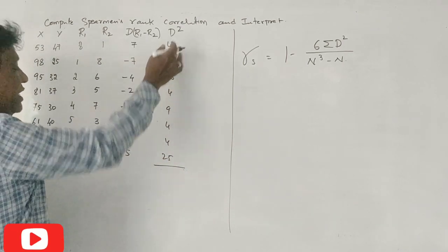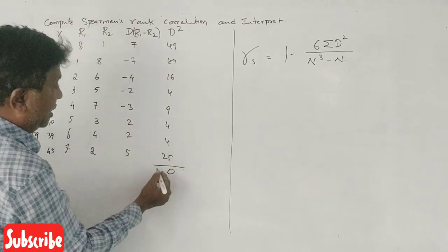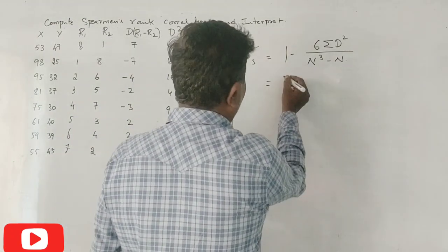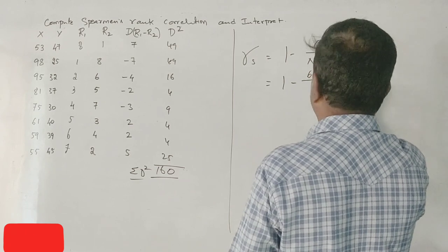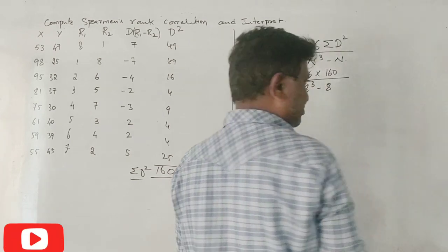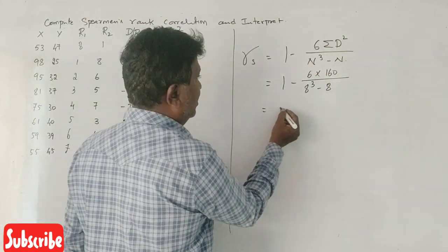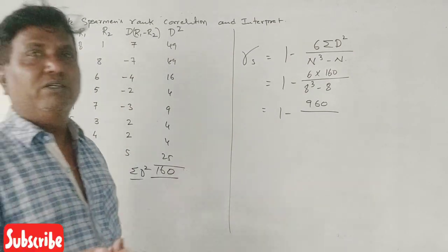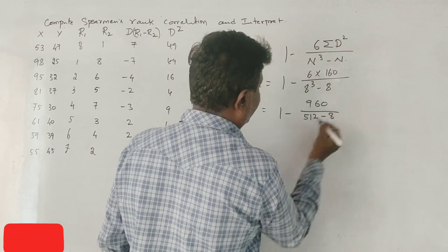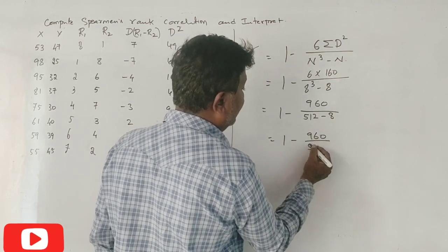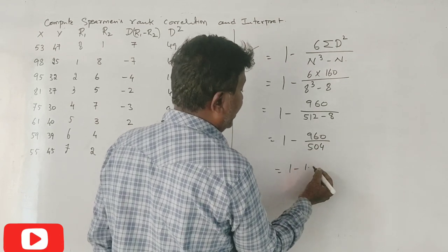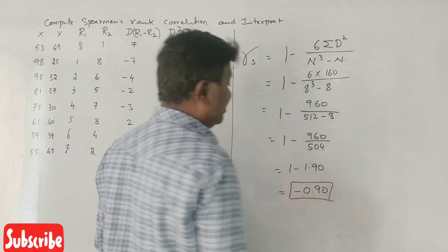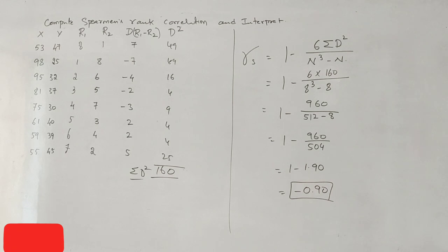This is minus 3. This is minus 1 minus 6. This is minus 7, 8, 9, 9. 1 minus 960 divided by 5 — not 4. 1 minus 1.90, 1 minus 0.90. This would be more than 1.90. You can see that.